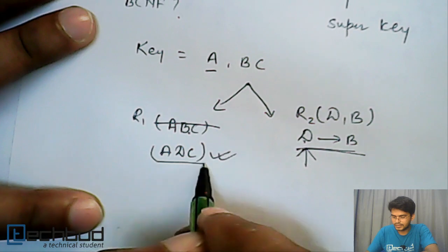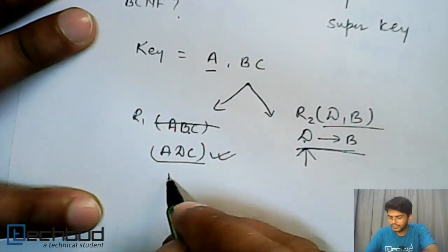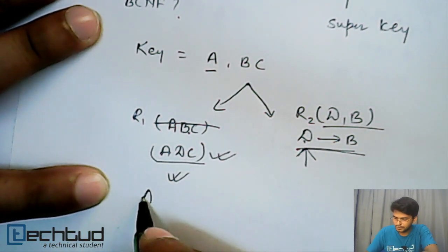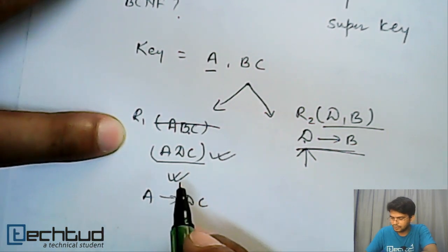So we have two relationships, that is ACD and DB. Now ACD is in BCNF. So what will be the functional dependency here? It will be A determines DC, and as B is gone...